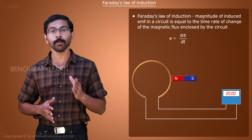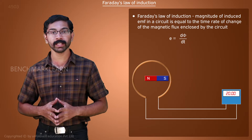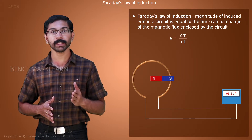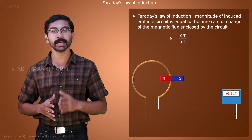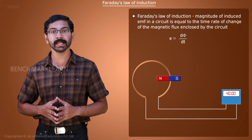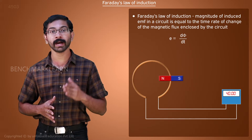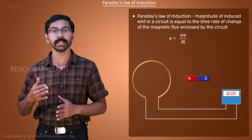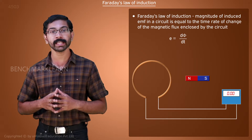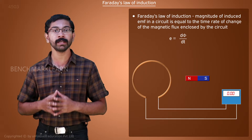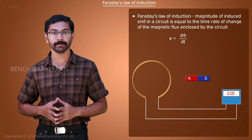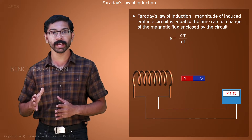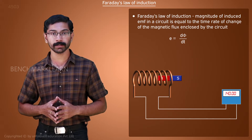This gives us two methods to increase the induced EMF. The first method is to move the conductor through the changing magnetic field at a high speed. The other method is to increase the total flux change experienced by the conductor. For that, we can use a coil of wire instead of a single conductor.